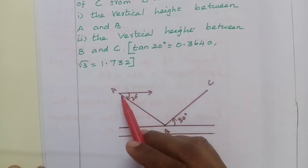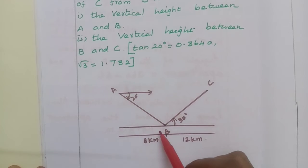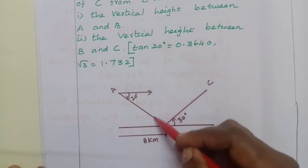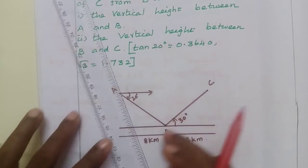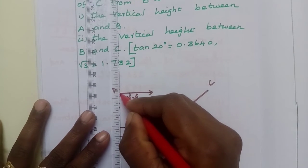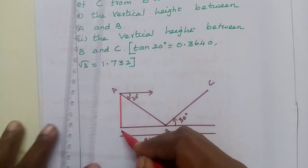The vertical height between A and B. So in the A to B distance, we can join.